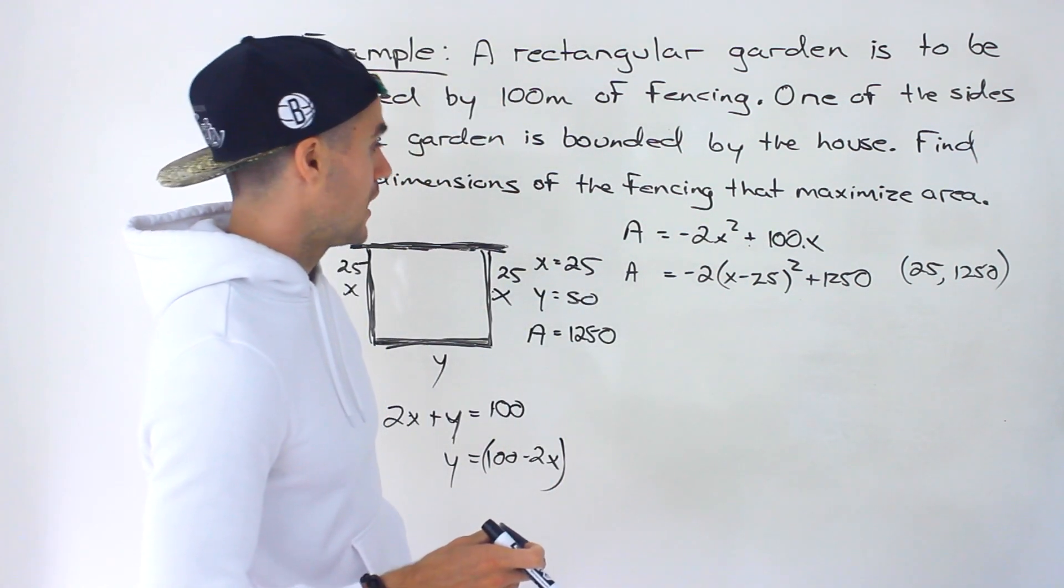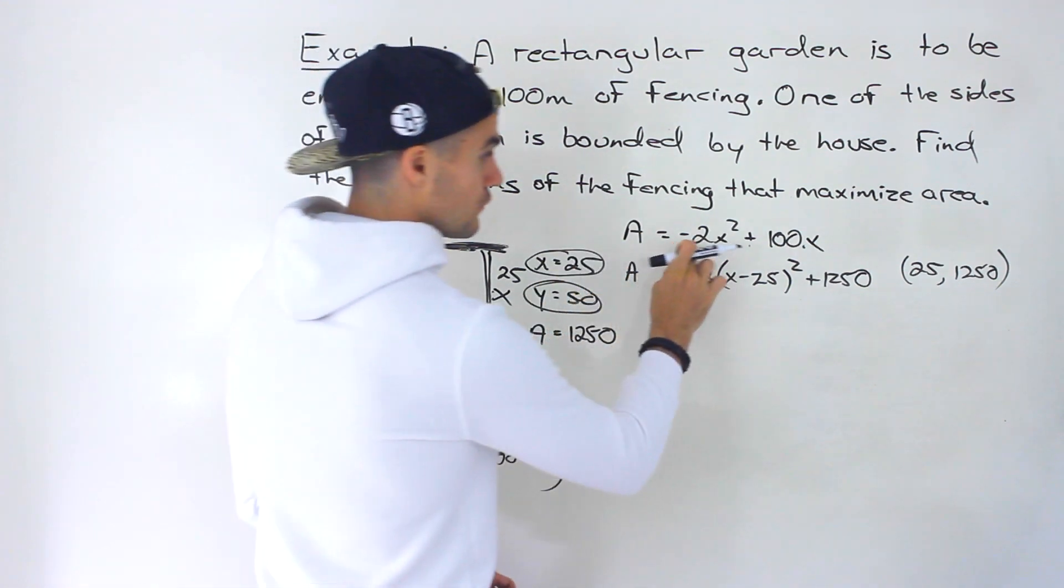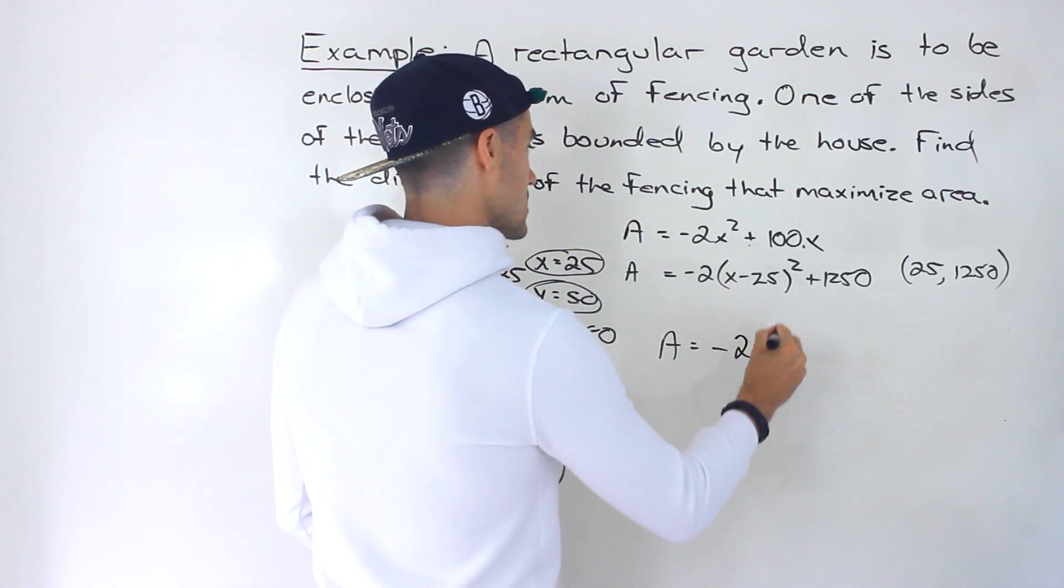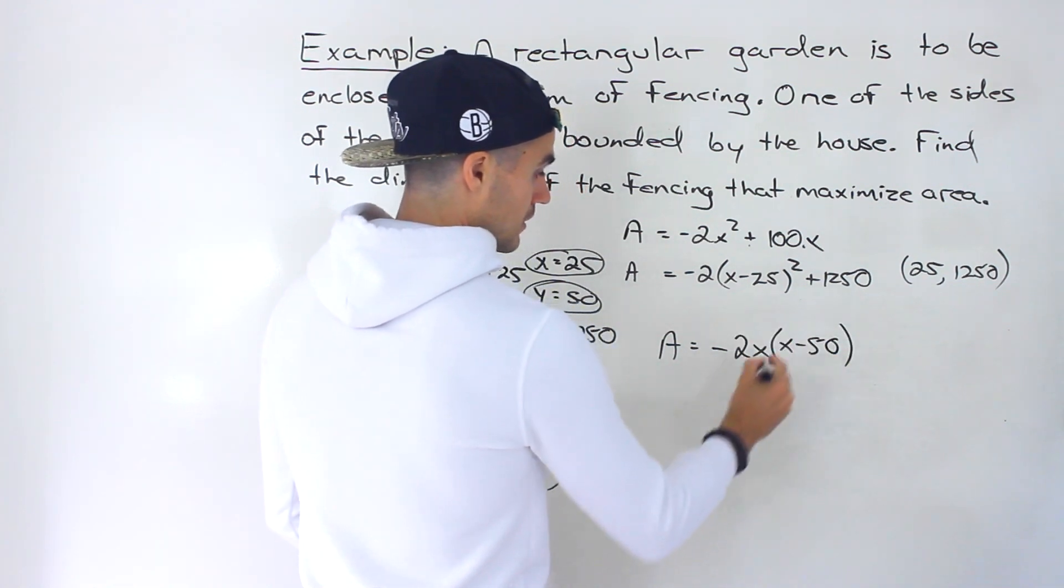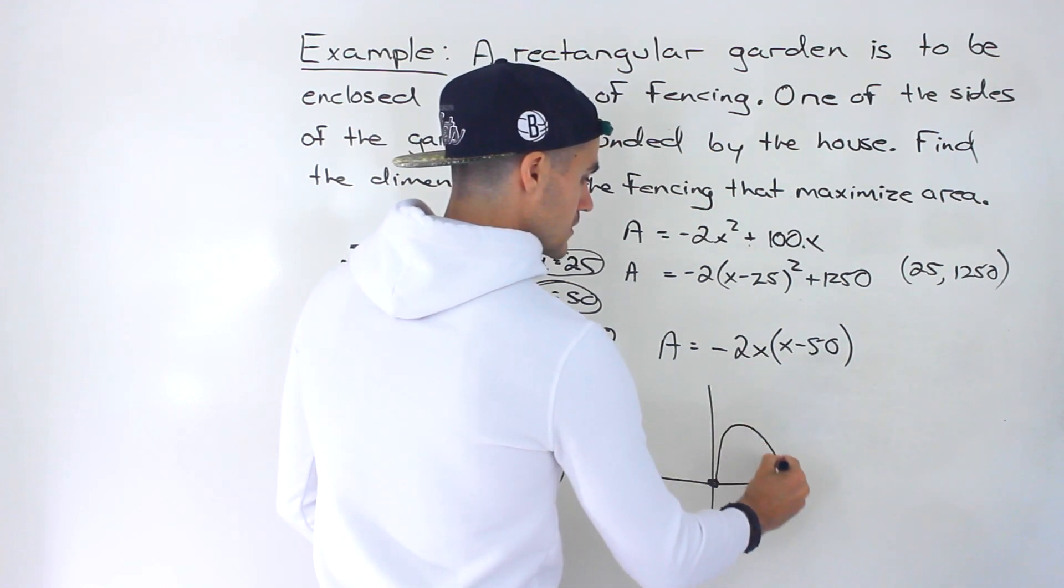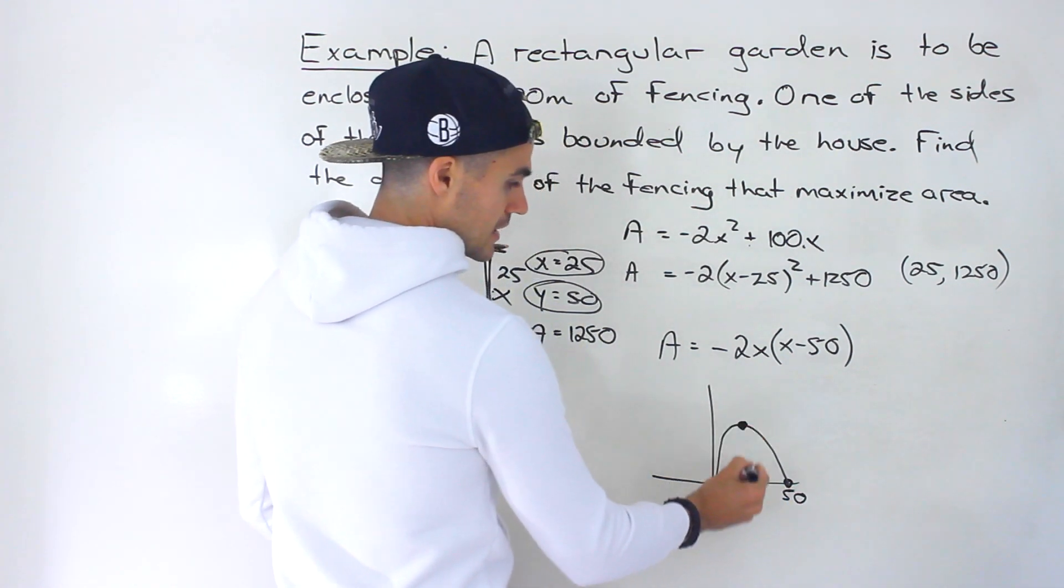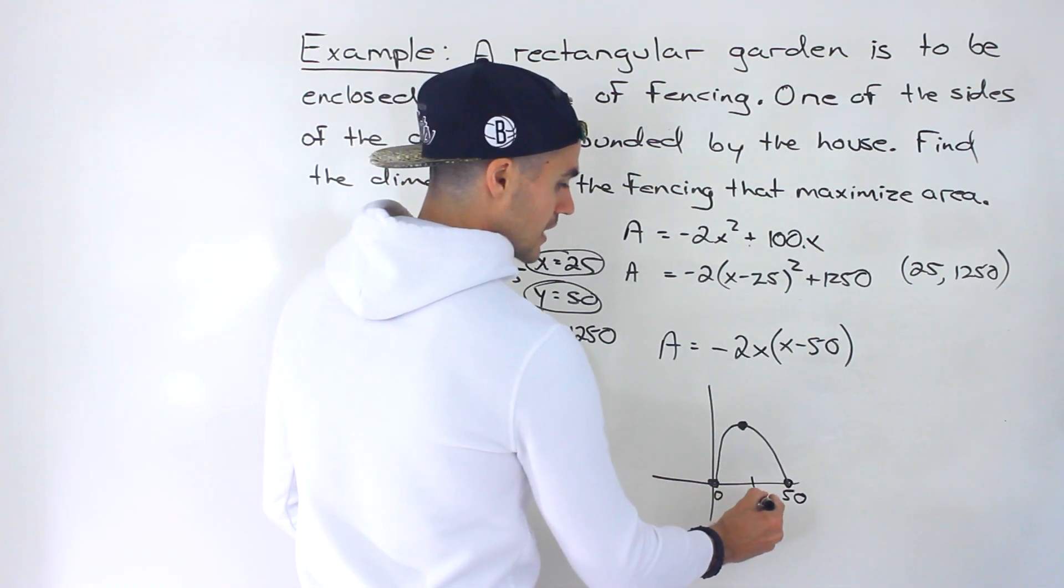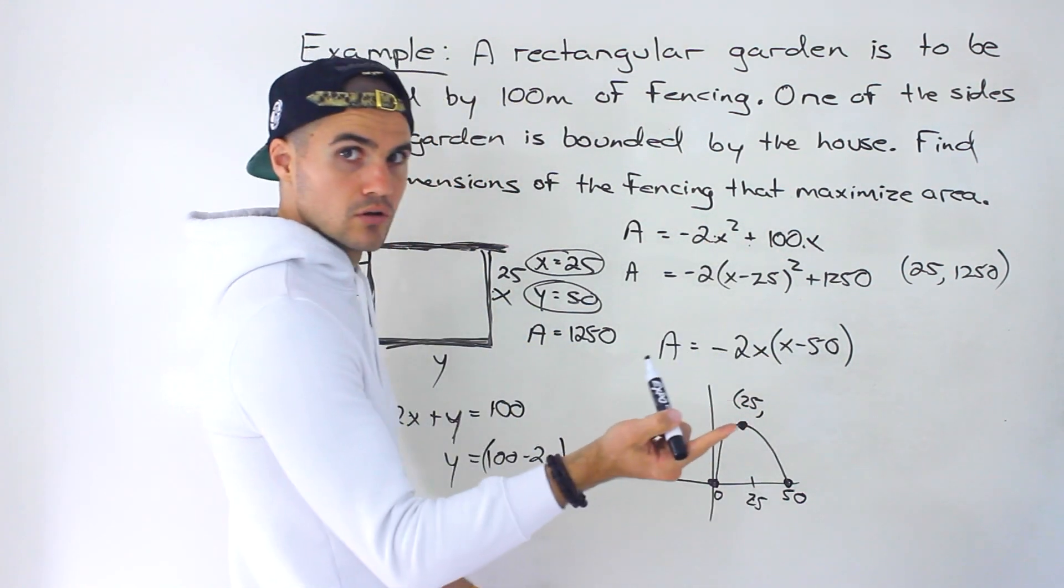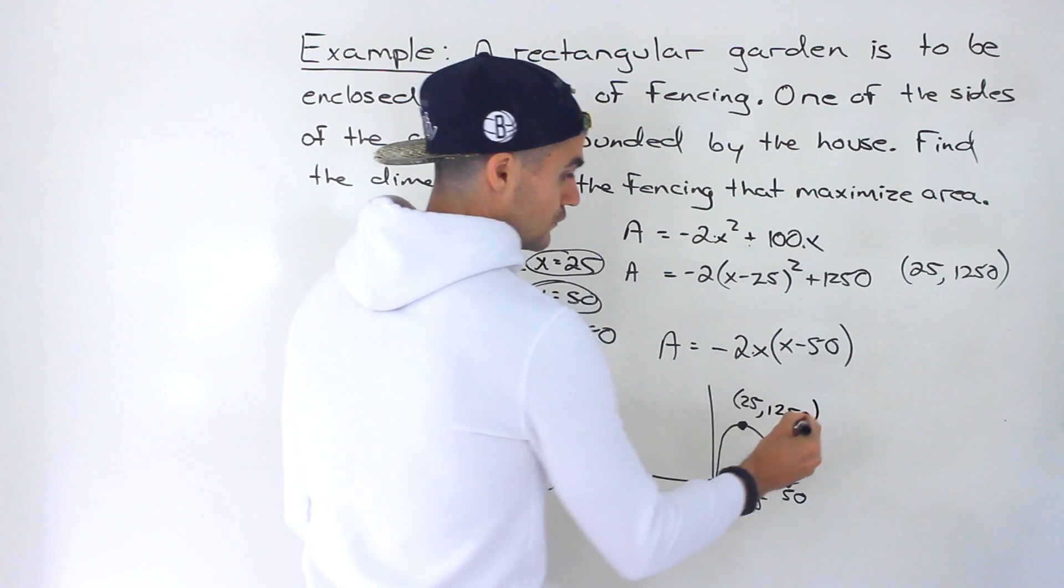Right? And so we're pretty much done at this point. These are the dimensions that are going to maximize the area. Now I mentioned also that if you want to find the vertex, you could also factor this. So we could take out a negative 2X and we'd be left with X minus 50. And from here, you could tell what are the two intercepts? Well, zero and 50. So we end up like that. And then the vertex is going to be in the middle of the intercept. So we know the vertex is going to have an X value of 25. And then we could plug in 25 into the original equation, or we could plug it in here as well. It doesn't matter. We're just still going to get that 1250 either way.